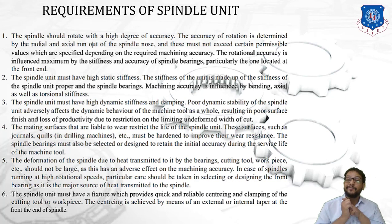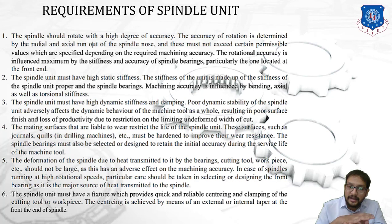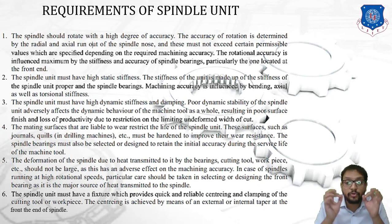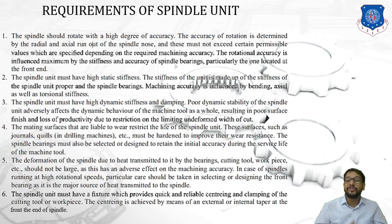The fourth requirement concerns wear resistance. Mating surfaces that are liable to wear — such as journals and wheels in drilling machines — must be hardened to improve their wear resistance. Spindle bearings must also be selected or designed to retain initial accuracy during the service life of the machine tool.